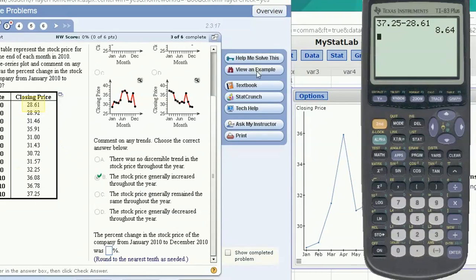Now, what I want to do is find what percent of the original price is that. So divide it by 28.61, and let's multiply it by 100 just to put it into a percent, 30.199. Now, I'm going to round it to the nearest tenth, so that's 30.2%.